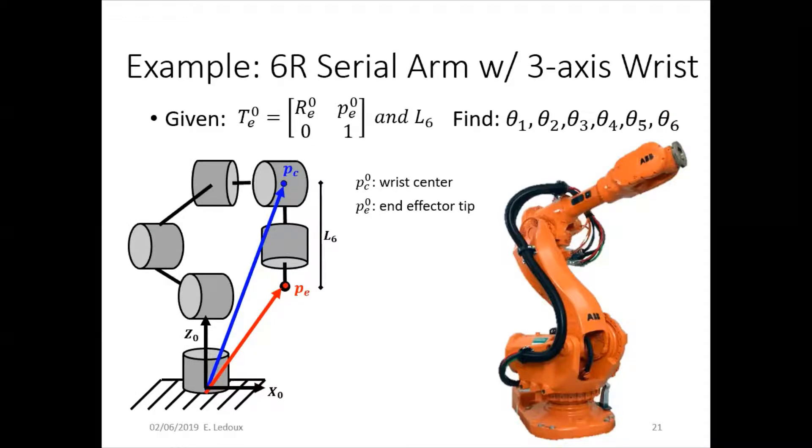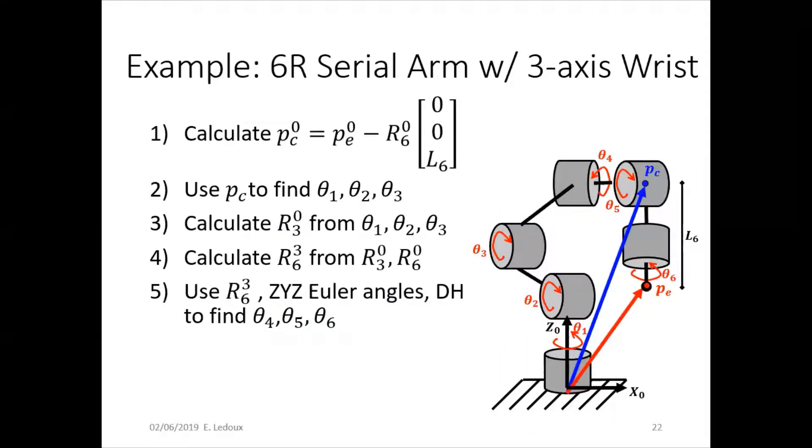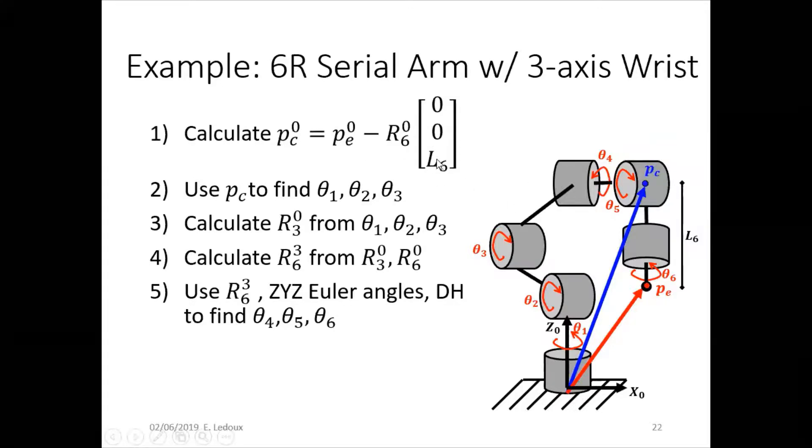So here, PC is the center of the wrist. And PE is the end effector tip. The steps to solve this are calculate PC. If we're given L6 and we're given that orientation, we can get from the end effector to the wrist center. Then use that point to find theta 1, 2, and 3.